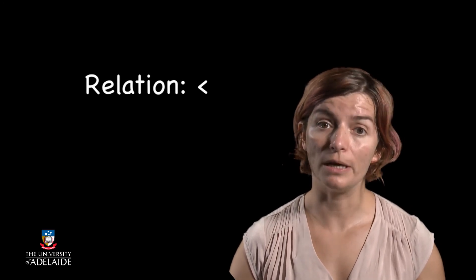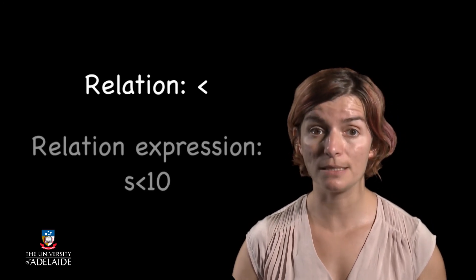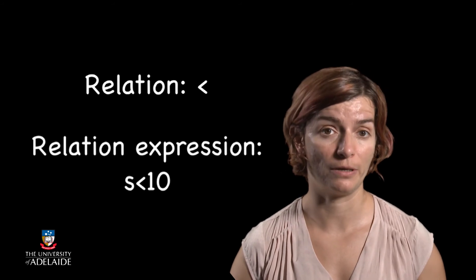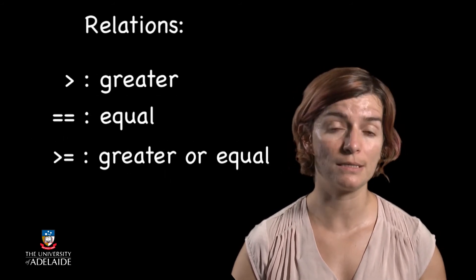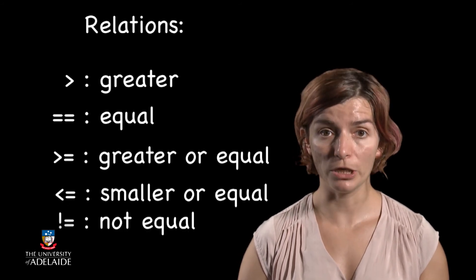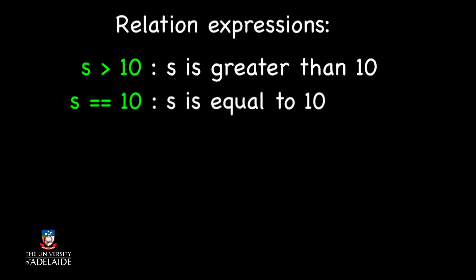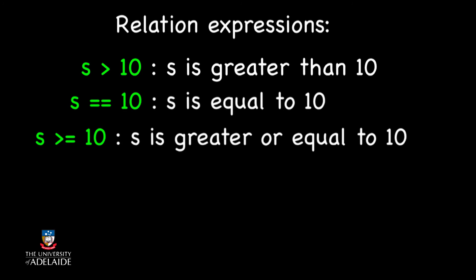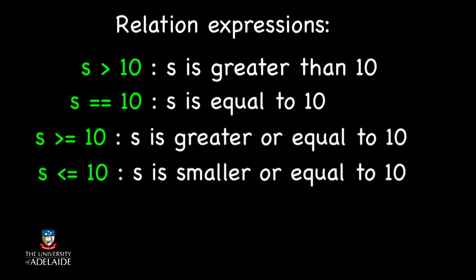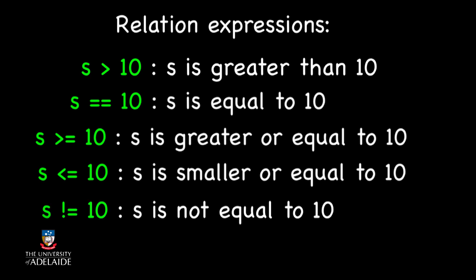We call the sign smaller a relation, and the statement s smaller than 10 a relational expression. Other relations include: greater, equal, greater or equal than, smaller or equal to, and not equal — which using s and 10 can be read like this: s greater than 10, s is equal to 10, s is greater or equal to 10, s is smaller or equal to 10, s is not equal to 10. These are really powerful constructs as of themselves.